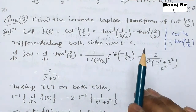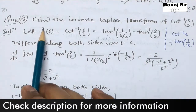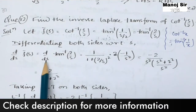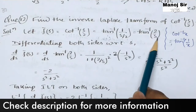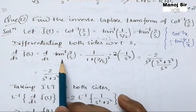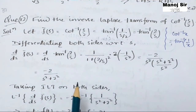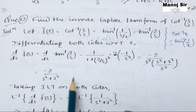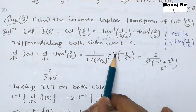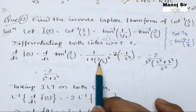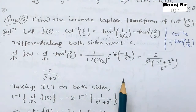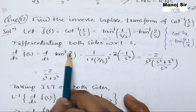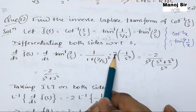Now we differentiate both sides with respect to s. So d/ds of f̄(s) equals d/ds of tan⁻¹(2/s). We know that the differentiation of tan⁻¹(x) is 1/(1 + x²). With x = 2/s, this becomes 1/(1 + (2/s)²) multiplied by the derivative of 2/s, which is −2/s².